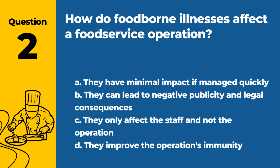Question 2. How do foodborne illnesses affect a food service operation? A. They have minimal impact if managed quickly. B. They can lead to negative publicity and legal consequences. C. They only affect the staff and not the operation. D. They improve the operation's immunity. Answer: B. They can lead to negative publicity and legal consequences. Foodborne illnesses can significantly affect a food service operation by damaging its reputation and potentially leading to legal actions against the establishment.